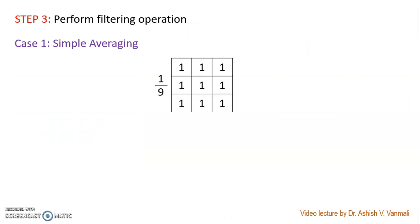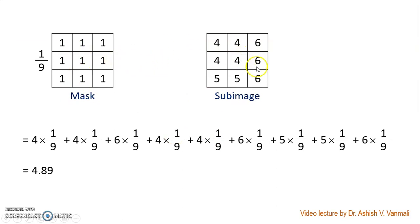Now we have the third step where we perform the actual filtering. Whenever we have spatial linear filtering, we take the mask, take the underneath sub-image, multiply them point by point, and sum it up together. Whatever result we get, we put it back where the center lies. Now let's consider the first case: simple averaging. The corresponding mask is all ones with a multiplying factor of 1/9, meaning each pixel has a weight of 1/9. So we take this mask and the corresponding sub-image, multiply point by point, and sum up. The result is 1/9×4 + 1/9×4 + 1/9×6 + 1/9×4 and so on, giving a result of 4.89.